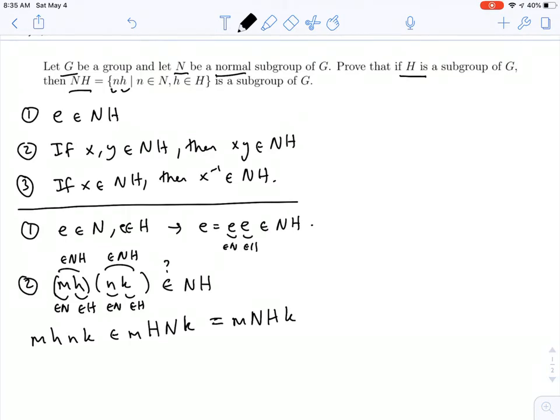And I know that, well, m is in N, and n is in N, of course. And so this whole thing is contained in, well, the first part, m times n, that's contained in N. It's actually equal to N. And then the second bit, I have h times k. Well, h is in H, and k is an element of H. So this whole thing is contained in, actually equal to, H.